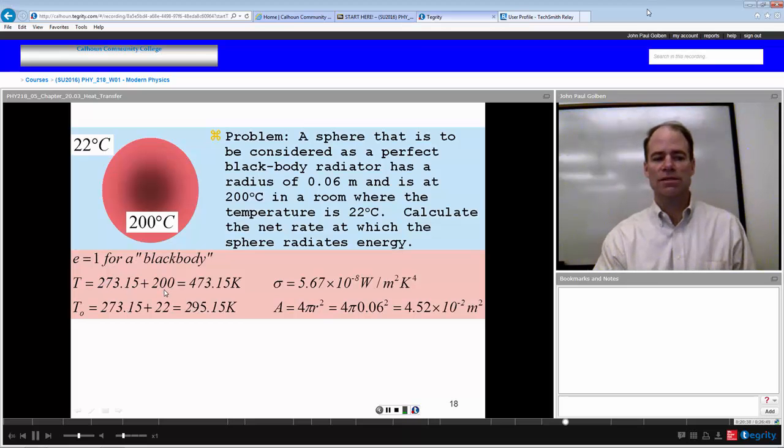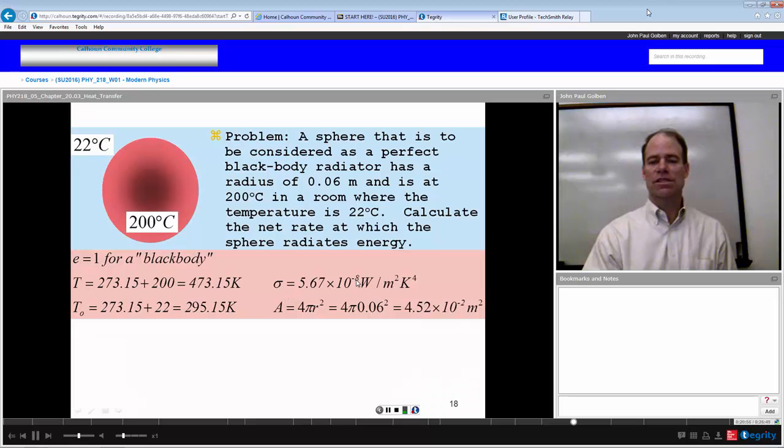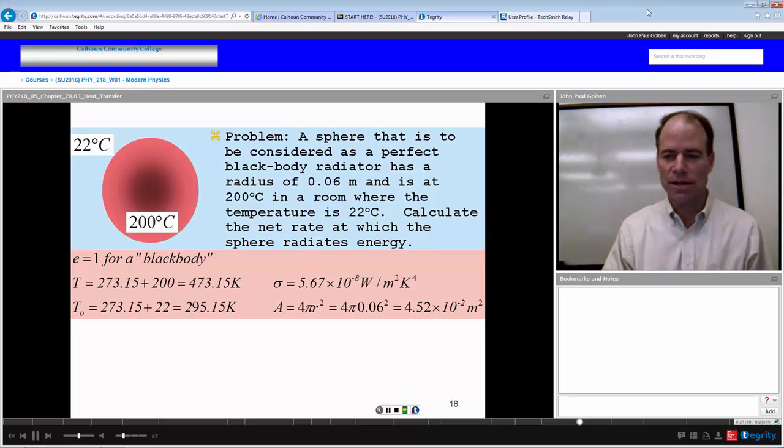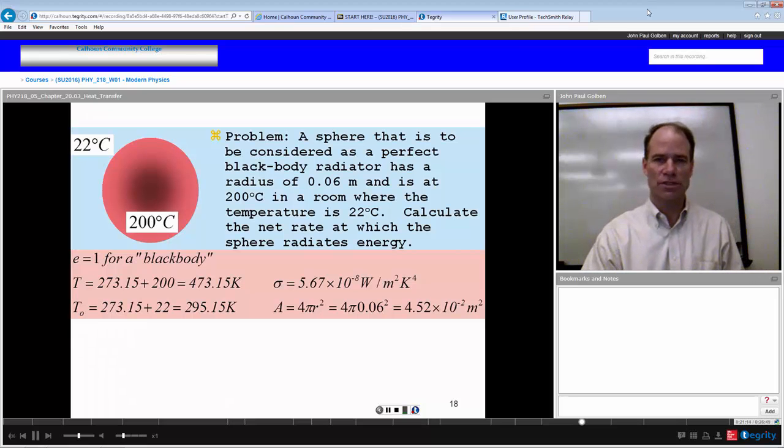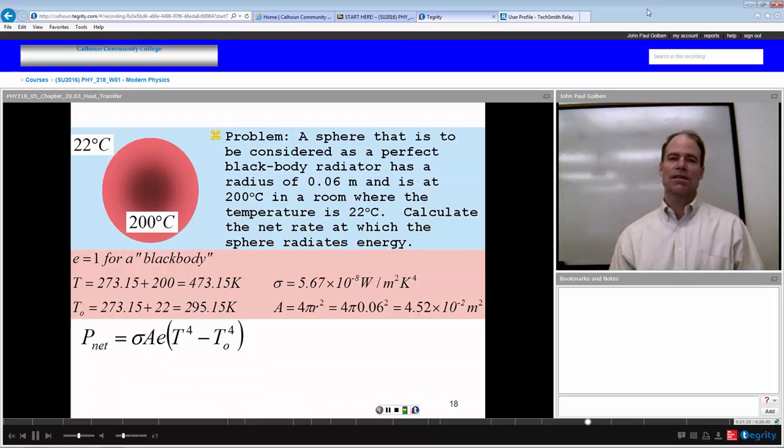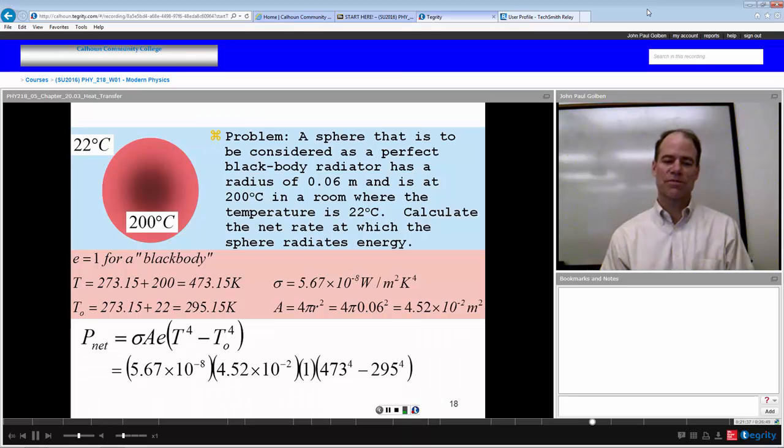Our temperature of the body is going to be 200 degrees Celsius plus 273.15 for a Kelvin temperature of 473.15. The temperature of the surroundings T naught is going to be 273.15 plus 22 which will be 295.15 Kelvin. Of course our sigma constant, Stefan-Boltzmann constant, is 5.67 times 10 to the minus 8. And then the area that we're emitting this over is the area of a sphere, the surface area of a sphere: 4 pi r squared. That's going to be 4 pi times the radius of the sphere squared, 0.06 meters squared, and that is 4.52 times 10 to the minus 2 square meters. So we have all the variables that we need to make this work.